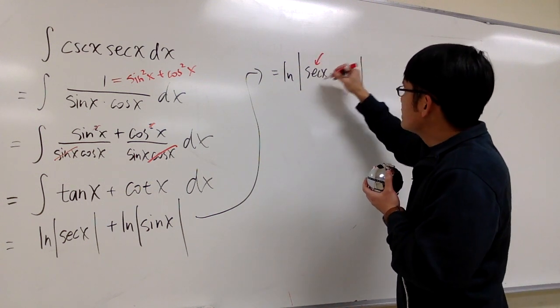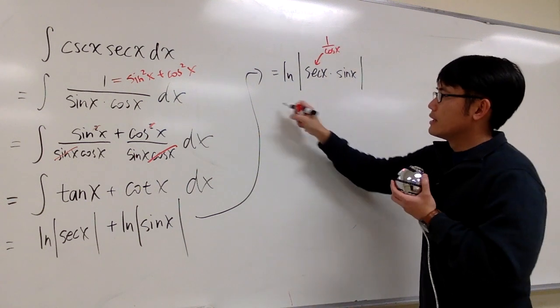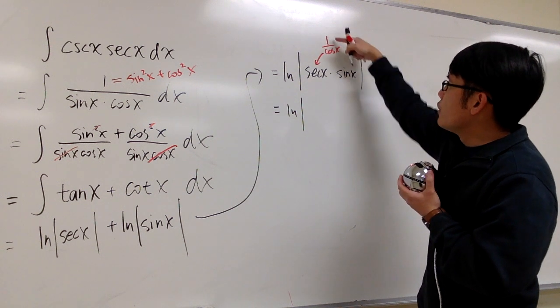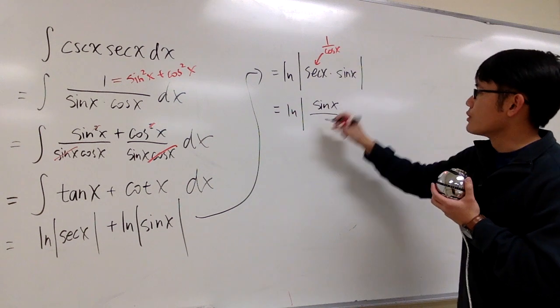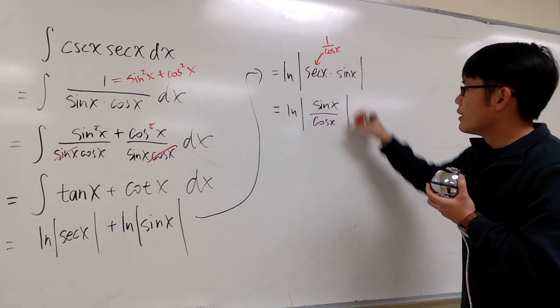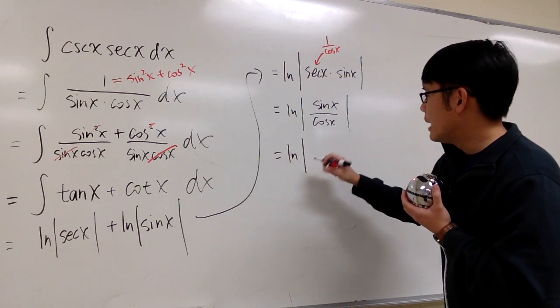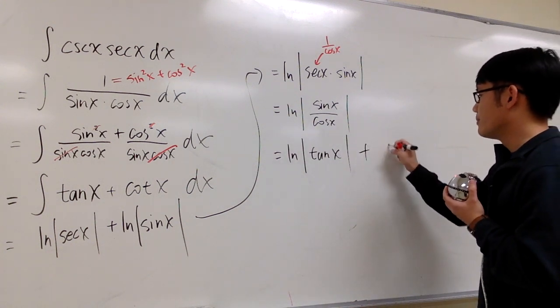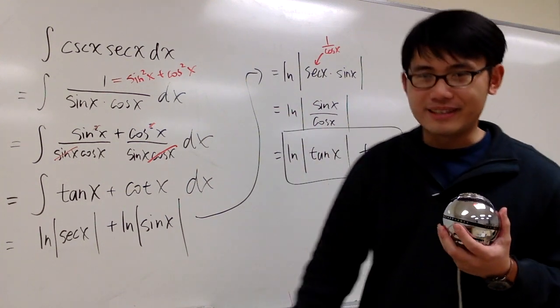And then remember, secant x right here is 1 over cosine x. So this is the same as ln absolute value. I have sine x multiplied with 1 over cosine, which is the sine x on the top over cosine x on the bottom. Which is what? This inside is tangent. So this is ln absolute value of tangent x. And then we are done. So plus c right here. And this is how you do number 6. That's it.